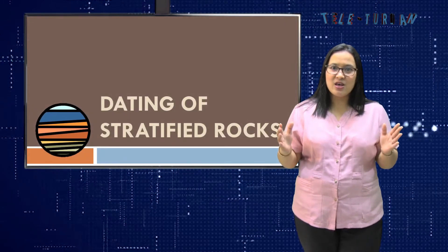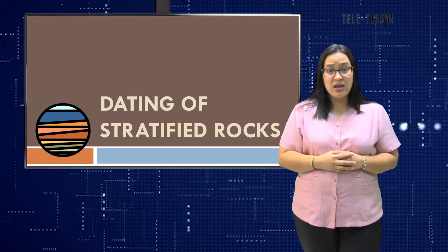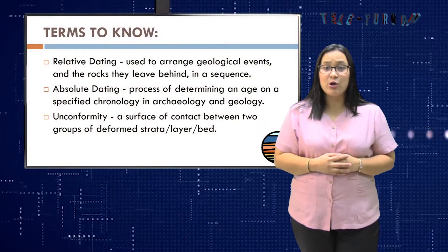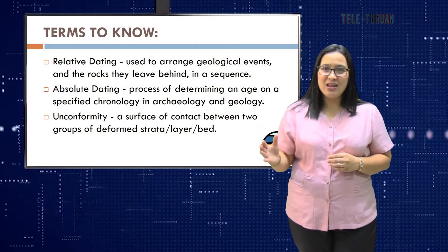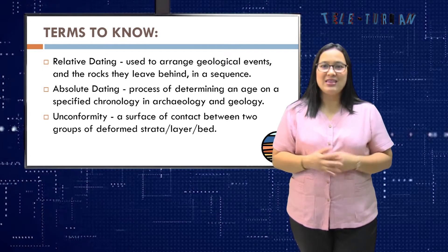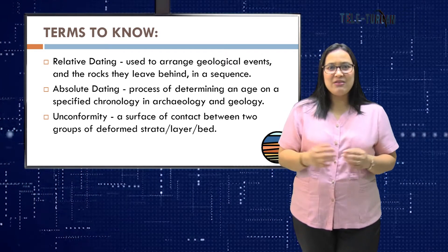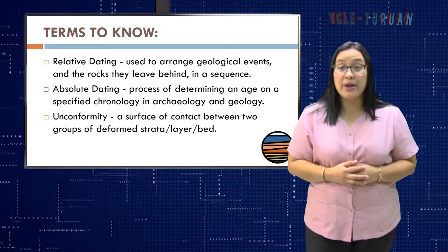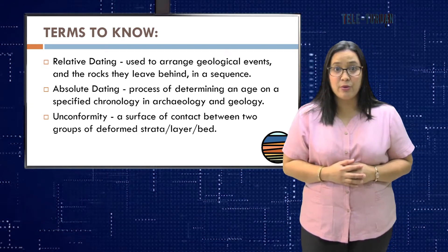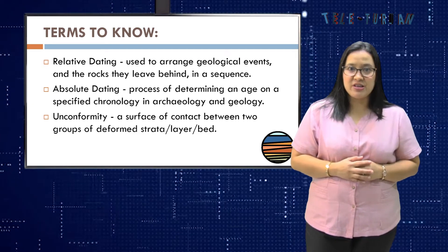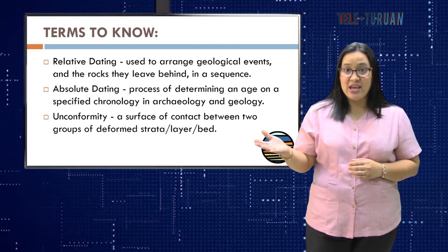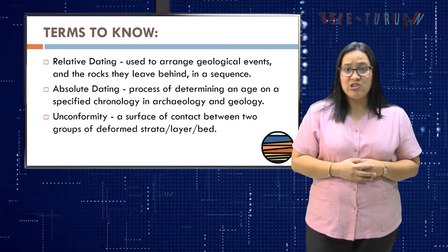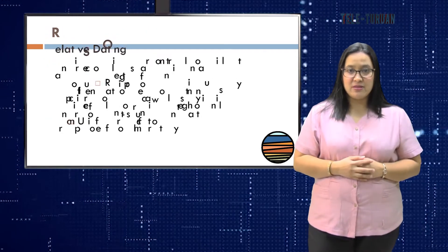So in this case, there are two methods that we can use to help us determine the age of the stratified rocks: the relative and absolute dating. Relative dating is when you give the age of a rock or fossil compared to another rock or fossil. For example, rock A is older than rock B, and an actual age in years is not determined.